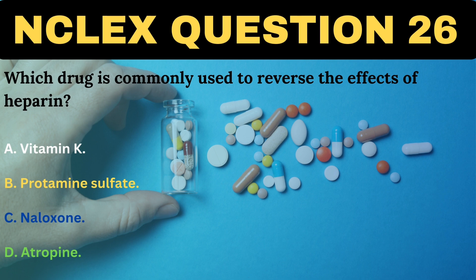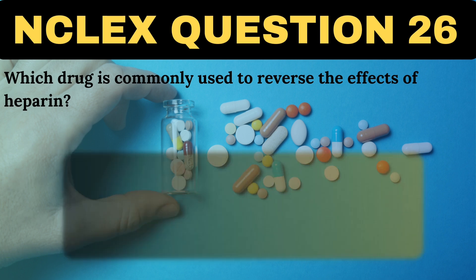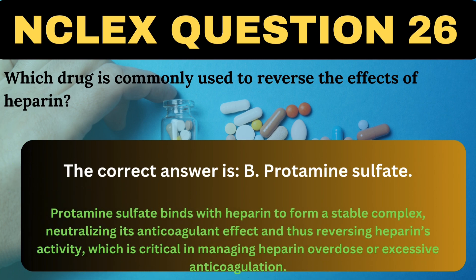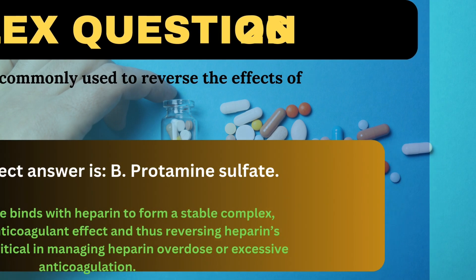Which drug is commonly used to reverse the effects of heparin? A. Vitamin K. B. Protamine sulfate. C. Naloxone. D. Atropine. The correct answer is B, Protamine sulfate. Protamine sulfate binds with heparin to form a stable complex, neutralizing its anticoagulant effect and thus reversing heparin's activity, which is critical in managing heparin overdose or excessive anticoagulation.